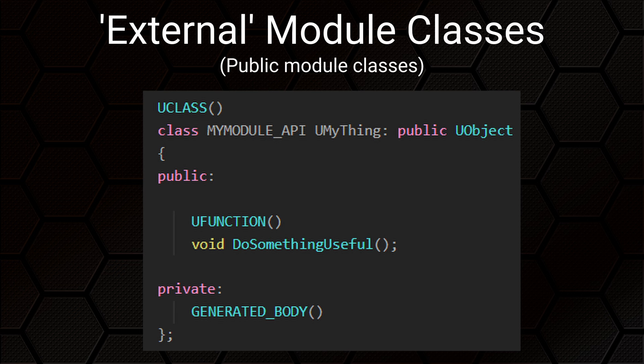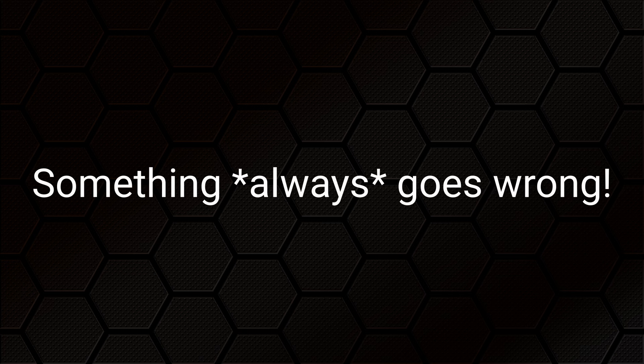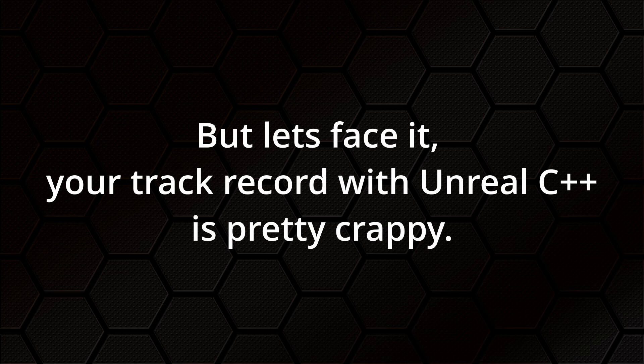We can also choose to expose the entire class to other modules by using that same MYMODULE_API macro, this time placing it immediately before the name of the class in the class declaration — which is generally the code created for you when you use the editor's new public class wizard. This means code in other modules can access anything normally exposed by the C++ public specifier. So we've made a new module, put some classes in it, marked some with the _API specifier — but if we go into another module and add a hash include for the thing we want to use, and then try to compile, it fails telling us it can't find the include file.